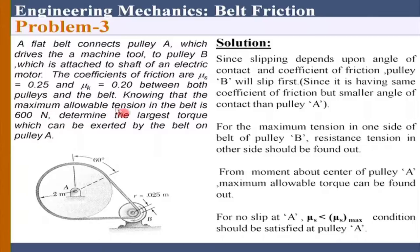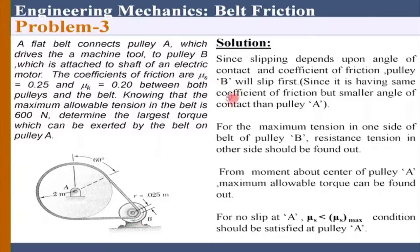The maximum allowable tension in the belt is 600 Newtons. If the allowable tension is given as maximum, it has to be on the top side - this belt will have the higher tension. Then we decide on the contact angle. Since mu_s remains the same, from the contact angle I can determine which one will undergo impending slip. In this case you will be able to show that B will slip first because there you have a lesser contact angle.